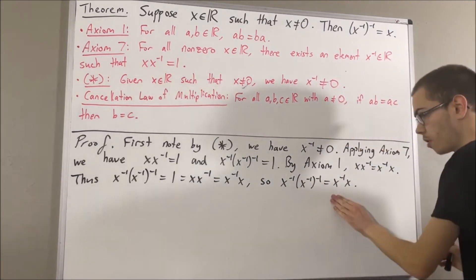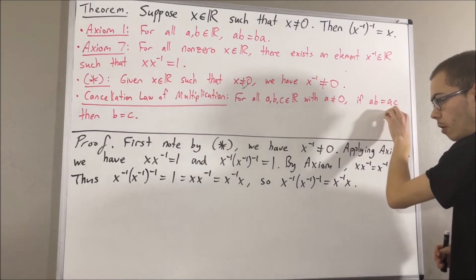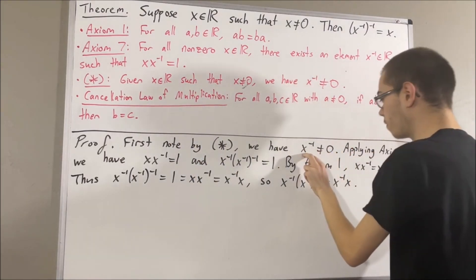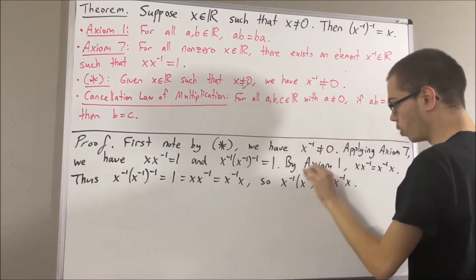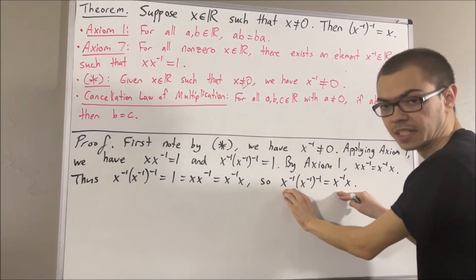And from here, we can apply the cancellation law of multiplication. Since the reciprocal of x is not equal to 0, we can apply the cancellation law of multiplication here and cancel out the reciprocal of x's.